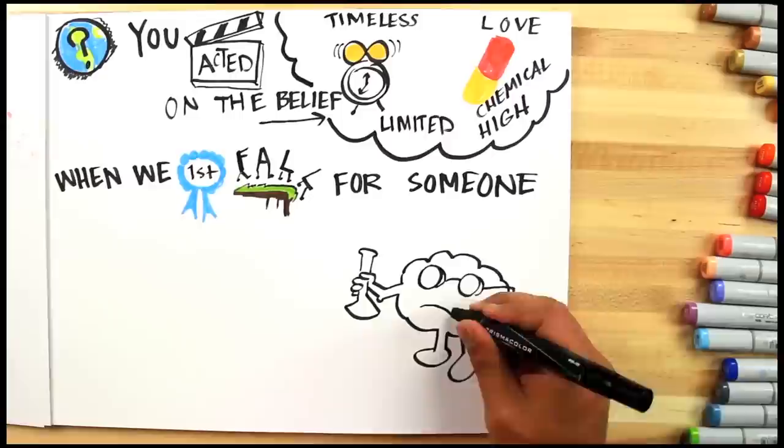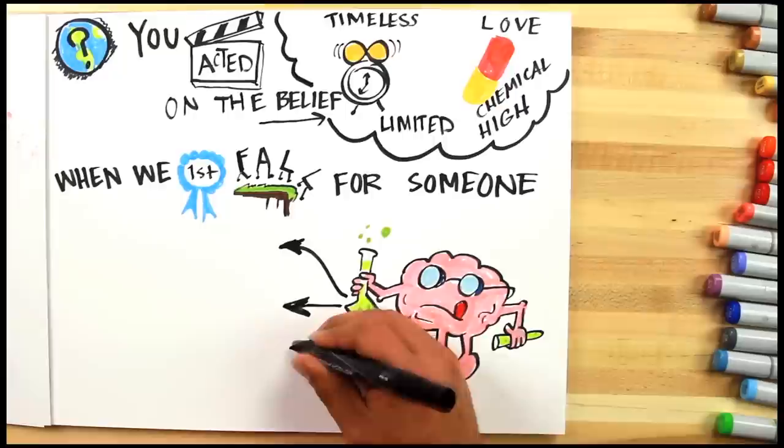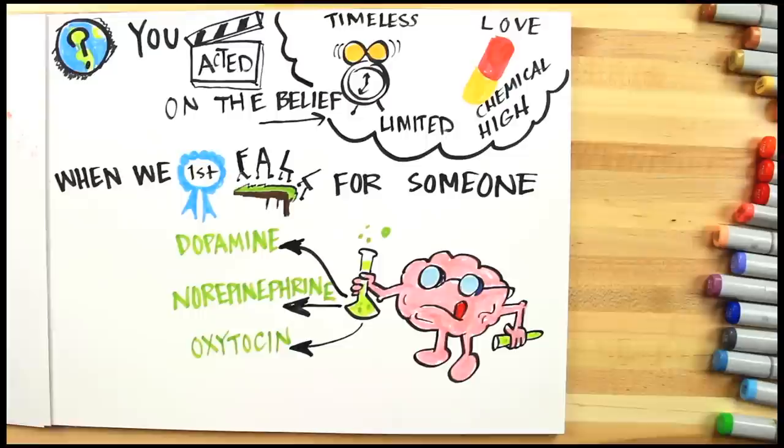When we first fall for someone, the brain makes and releases an abnormal amount of chemicals into the body that affect how we think and feel. For example, there's dopamine, norepinephrine, and oxytocin.